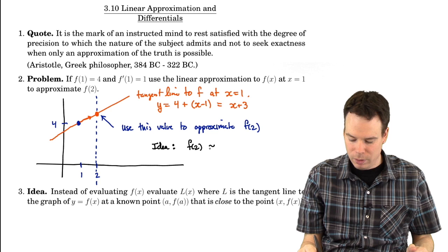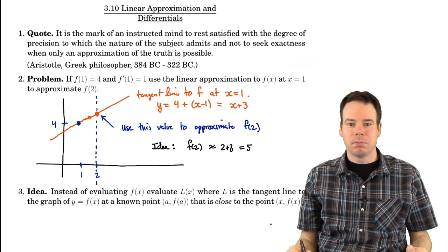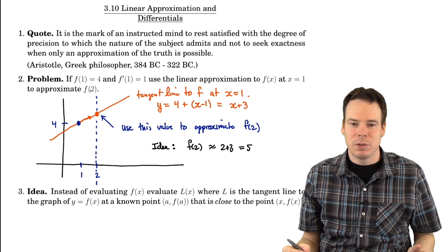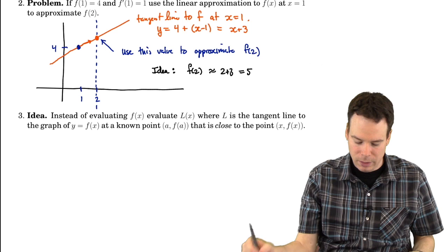That's the big idea: f(2) should be approximately the value we get on the tangent line, which in this case is 2 plus 3, so that's 5. We want to find the approximate value of f(2) by using information about the tangent line, since that's really all we have — information about the function in terms of what the tangent line is there.